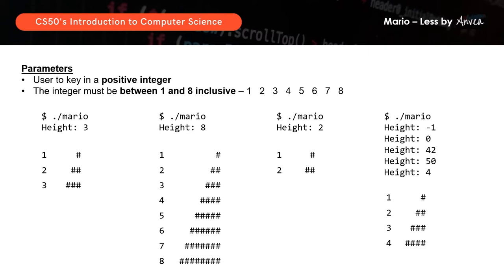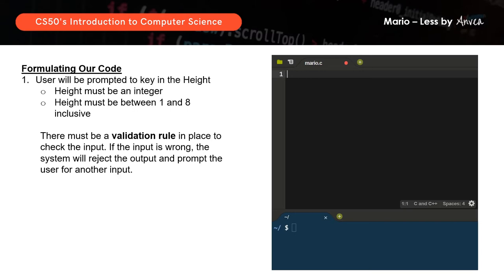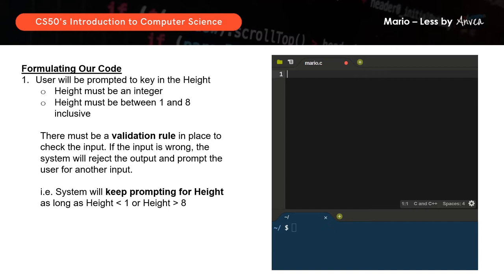So this is what we are looking to get. We've actually come up with the start of the program in terms of logic and flow in simple sentences. The user will be prompted to key in an integer between 1 and 8 inclusive, and we need a validation rule to check the input. If the input is wrong, the system will reject it and keep prompting the user. The system will keep prompting as long as height is less than 1 or greater than 8. For simplicity, instead of using the word "height", we'll use n to represent height for the rest of the video.